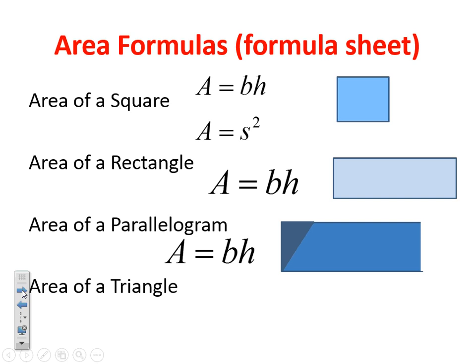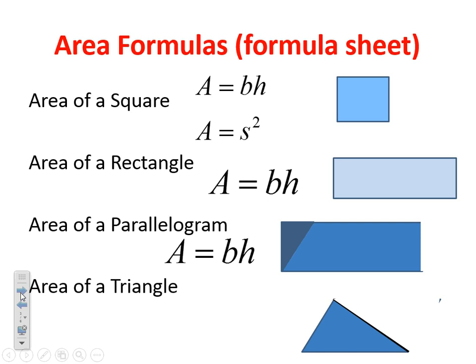And our last formula we need to get down on the formula sheet is area of a triangle. If you look at a parallelogram, which would be base times height, and I cut it in half, now I have a triangle. So to find a triangle, since I'm cutting it in half, my equation is going to be area equals base times height divided by 2. Now that we have all these wonderful formulas on our formula sheet, we're going to go ahead and do a few examples.